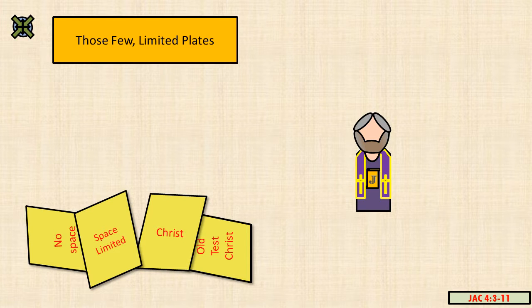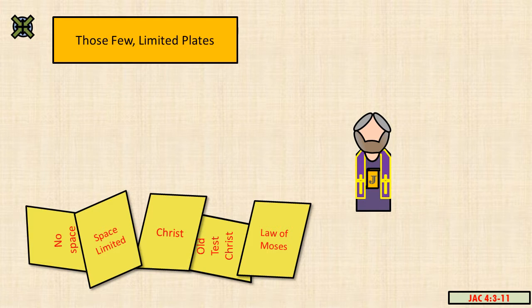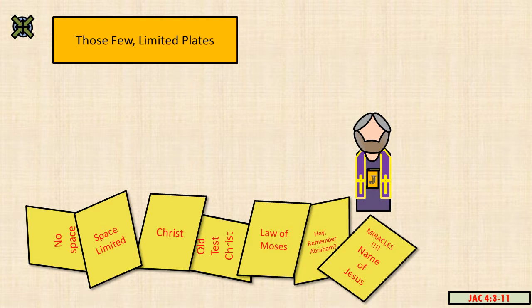And for this intent we will keep the law of Moses, the zombie law of Moses as we mentioned before, it pointing our souls to him. And for this cause it is sanctified unto us for righteousness, even as it was accounted unto Abraham in the wilderness to be obedient unto the commands of God in offering up his son Isaac, which is a similitude of God and his only begotten son. Got it. Wherefore we search the prophets and we have many revelations in the spirit of prophecy and having all these witnesses, we obtain a hope and our faith becometh unshaken insomuch that what we truly can command in the name of Jesus and the very trees obey us or the mountains or the waves of the sea, the trees and mountains and waves obey you in the name of Jesus. What did you do? You have this great power. What did you do with it? Nothing, apparently. Just keeps going.